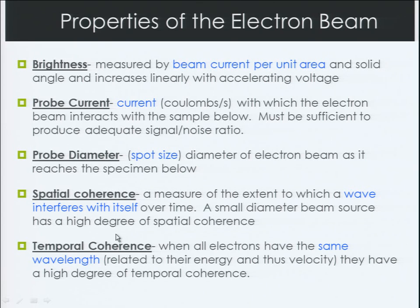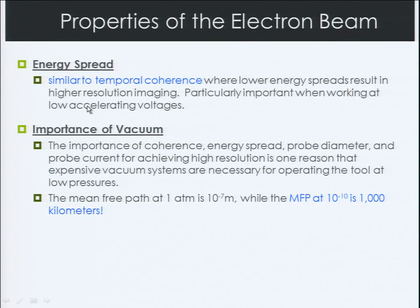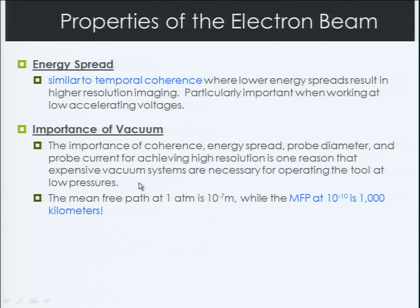Spatial coherence has to do with the extent to which a wave will interfere with itself over time. Since electrons can behave as waves, a small diameter beam source has a high degree of spatial coherence — meaning less interference with itself if we start with a small diameter. Temporal coherence means all electrons would have the exact same wavelength, traveling at the same velocity with the same energy. Energy spread is similar — lower energy spreads result in higher resolution imaging, particularly important at low accelerating voltages. Coherence, energy spread, probe diameter, and probe current are all necessary for achieving high resolution, and we need low levels of pressure to keep all these functioning adequately.